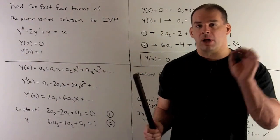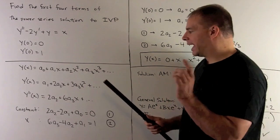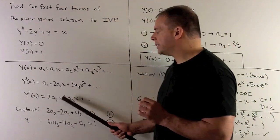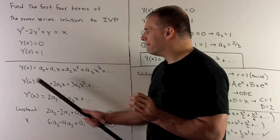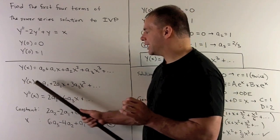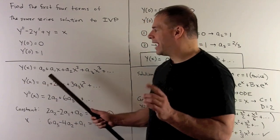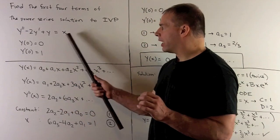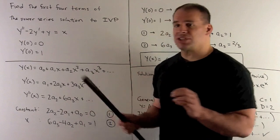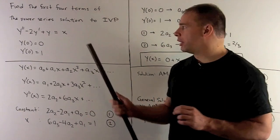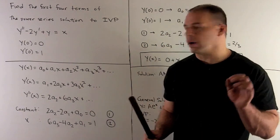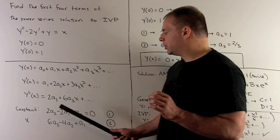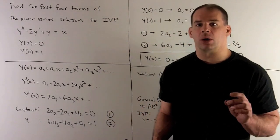Lining up all constant terms: from y double prime we get two a two, from minus two y prime we get minus two a one, and from y we get a zero. On the right side, since we only have an x, the constant term equals zero. This gives us equation one: two a two minus two a one plus a zero equals zero.